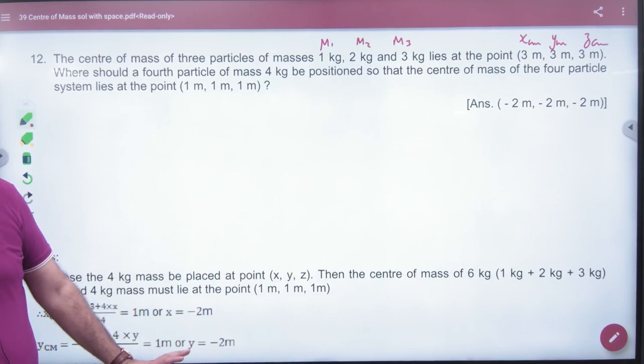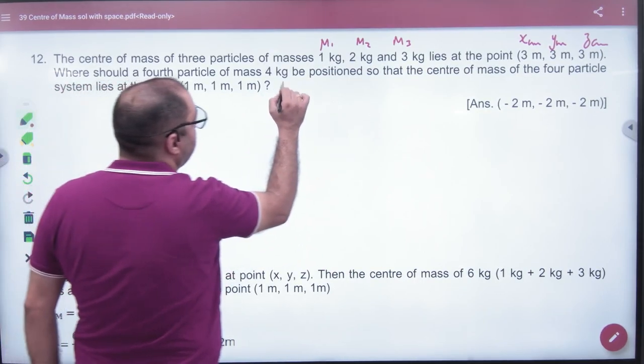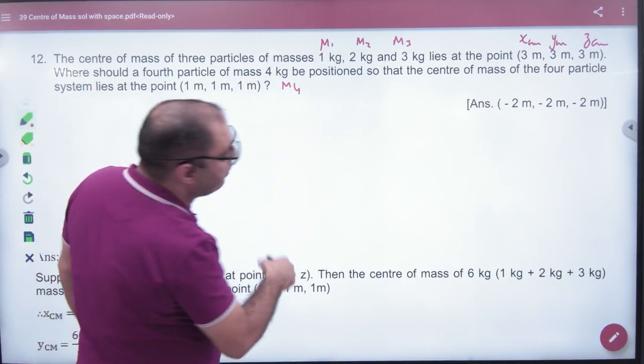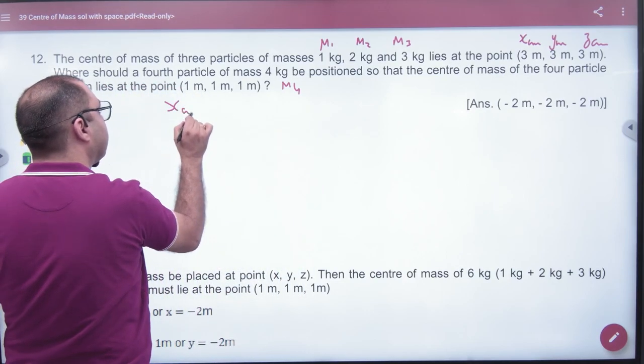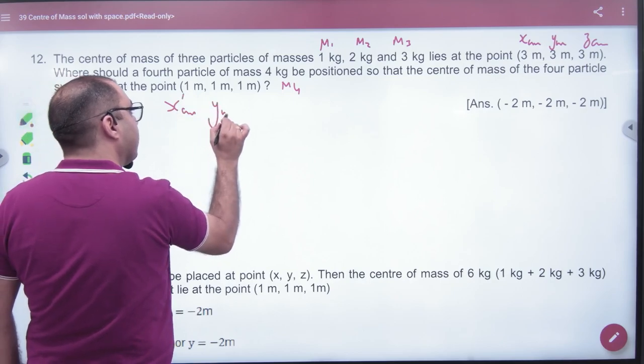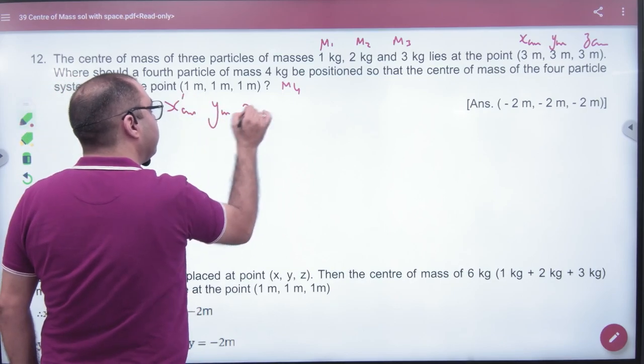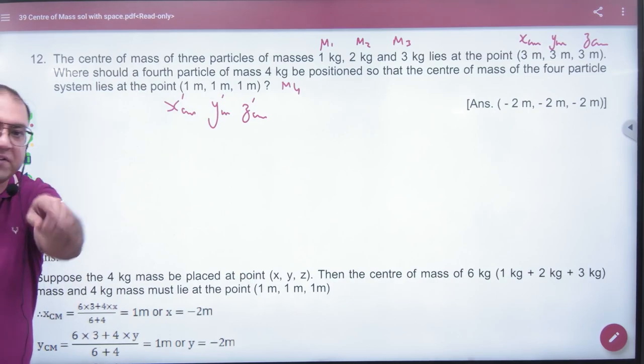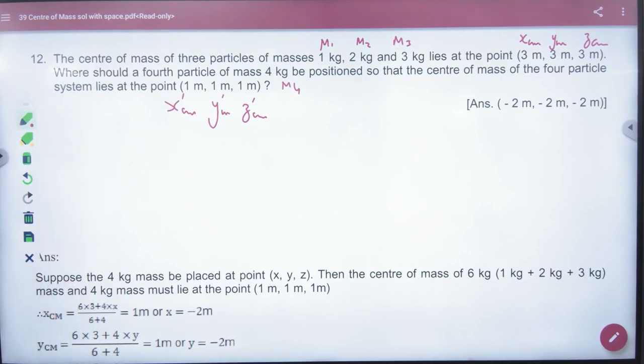It's clear here. Now, he says, the fourth particle is more than M4. Now, the new center of mass has shifted and the new center of mass. So, this is the new center of mass. So, you have to tell that the fourth particle of X, Y, Z coordinates.